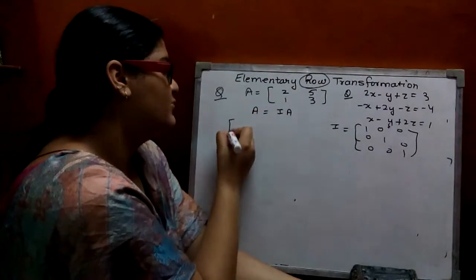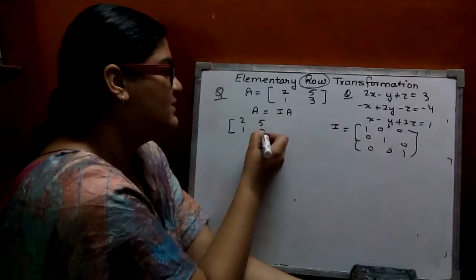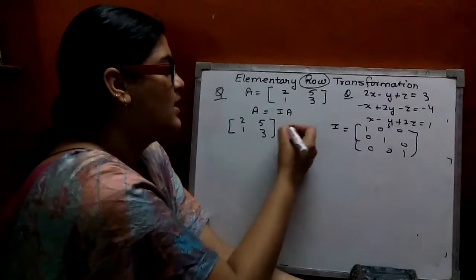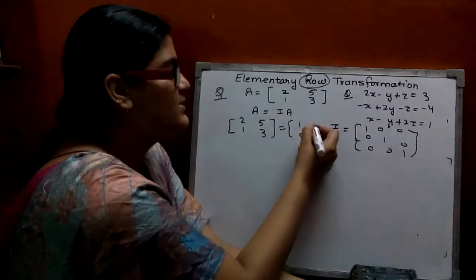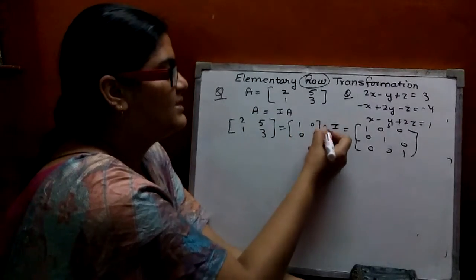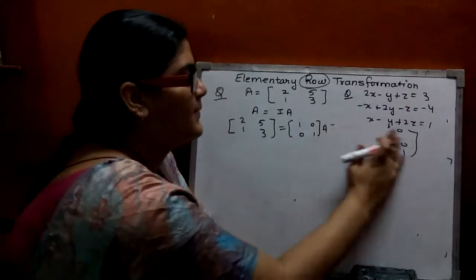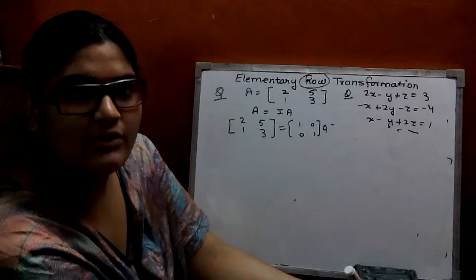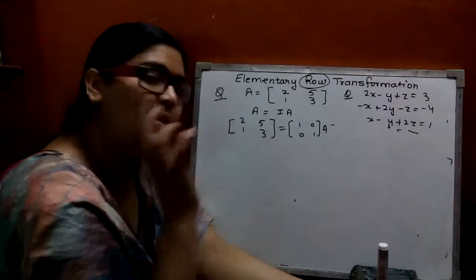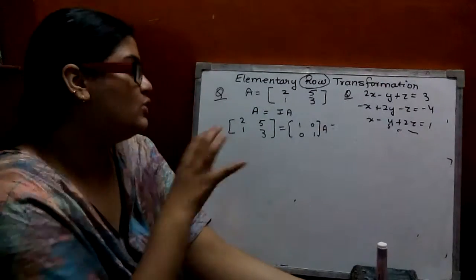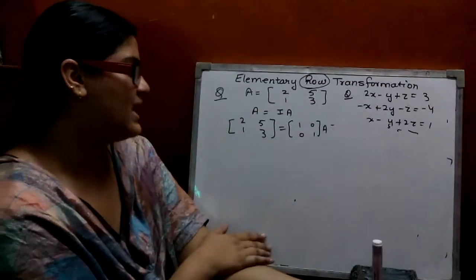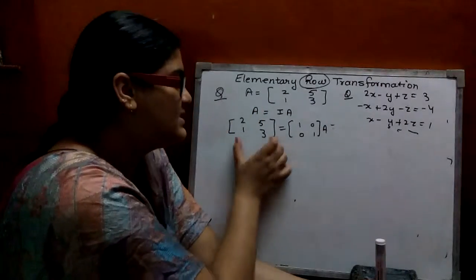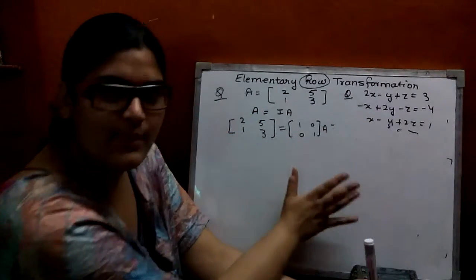Substitute all these values. A is [2, 1; 5, 3], I is [1, 0; 0, 1], and this gives us I times A. Now you have to find out the inverse. The purpose of solving this is that you have to make A into an identity matrix.